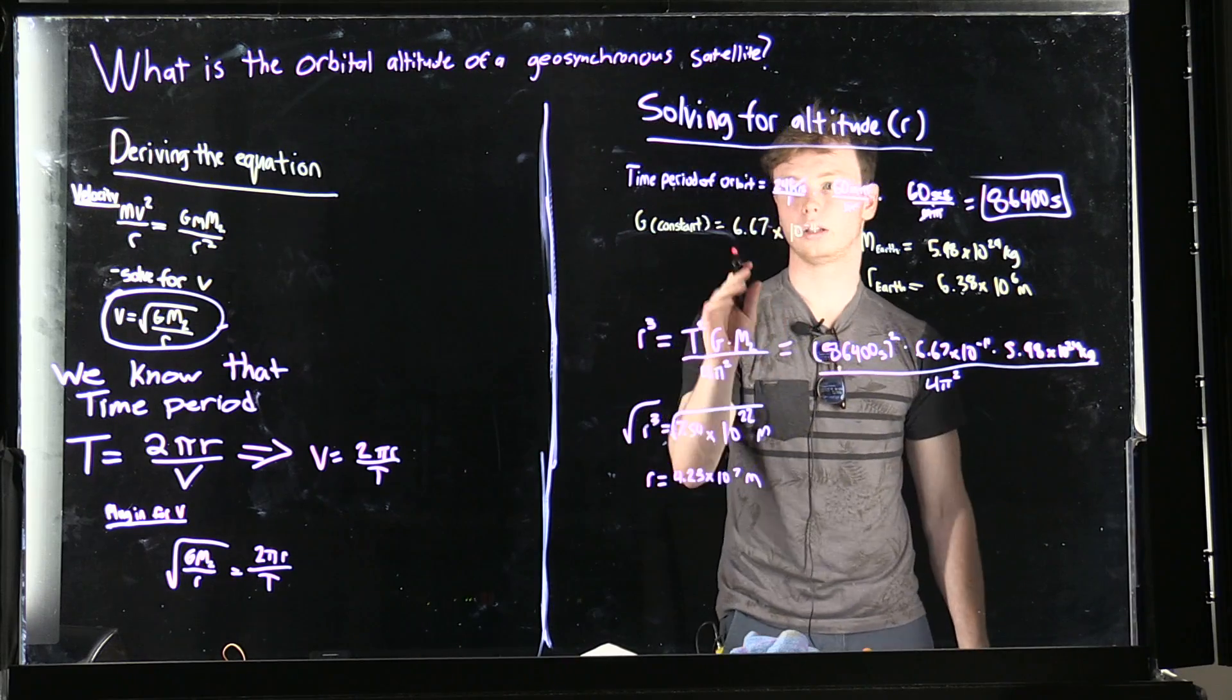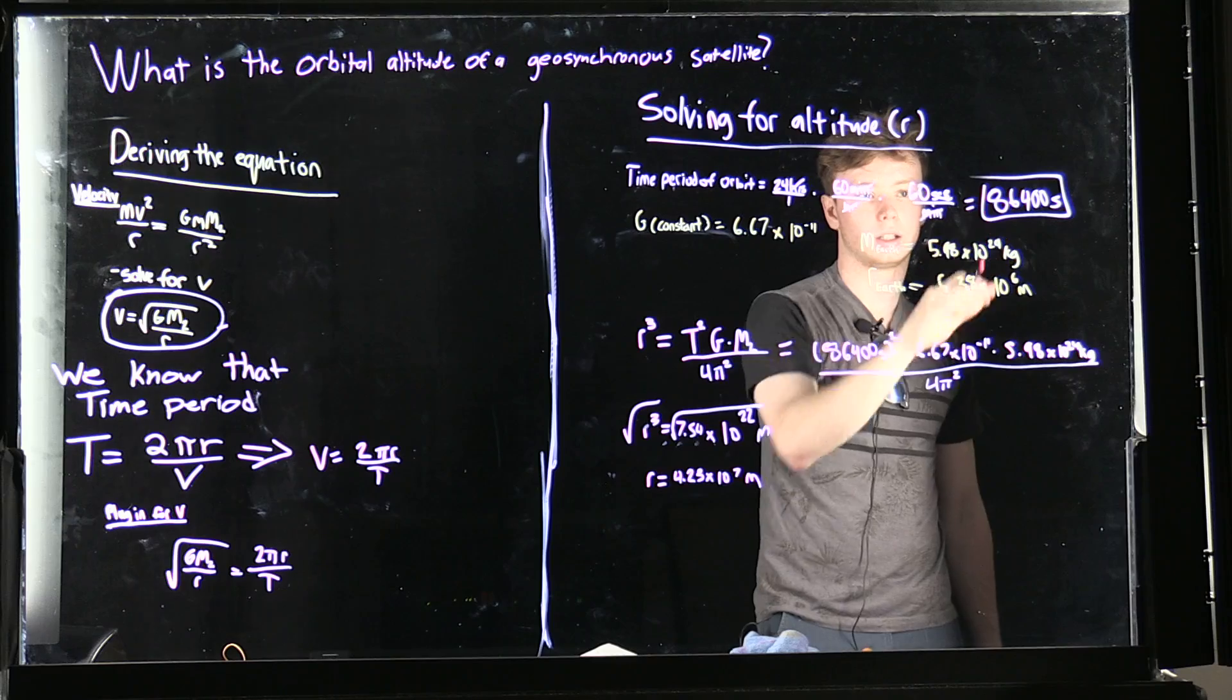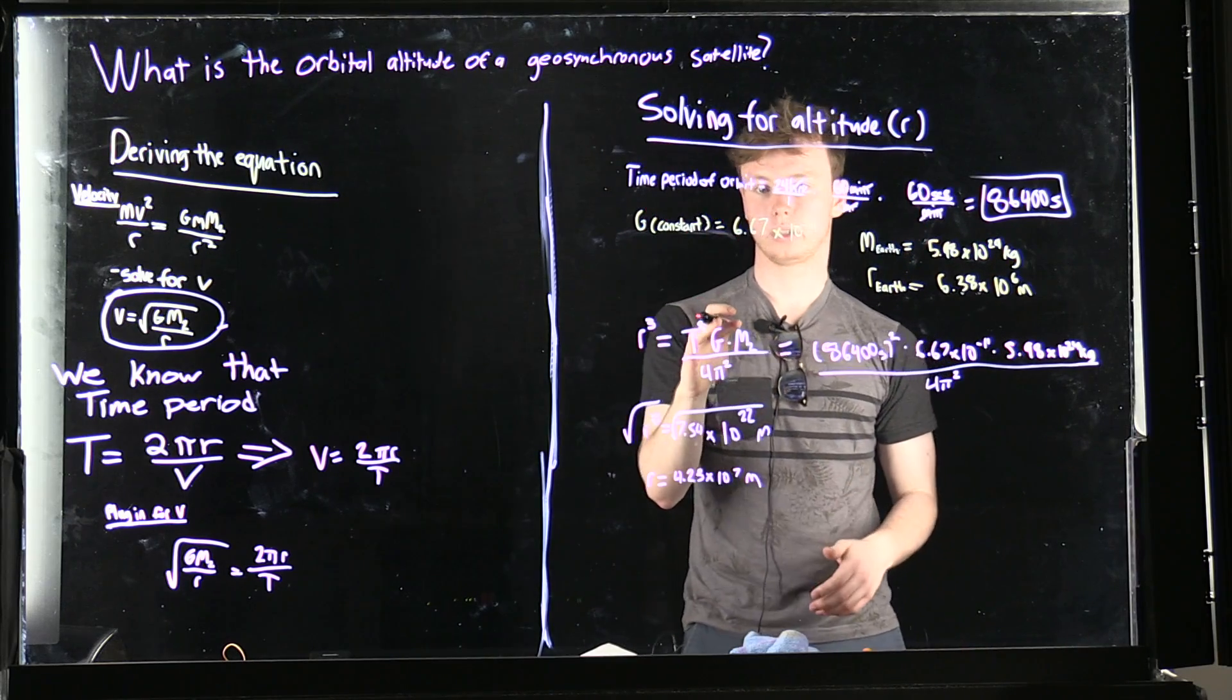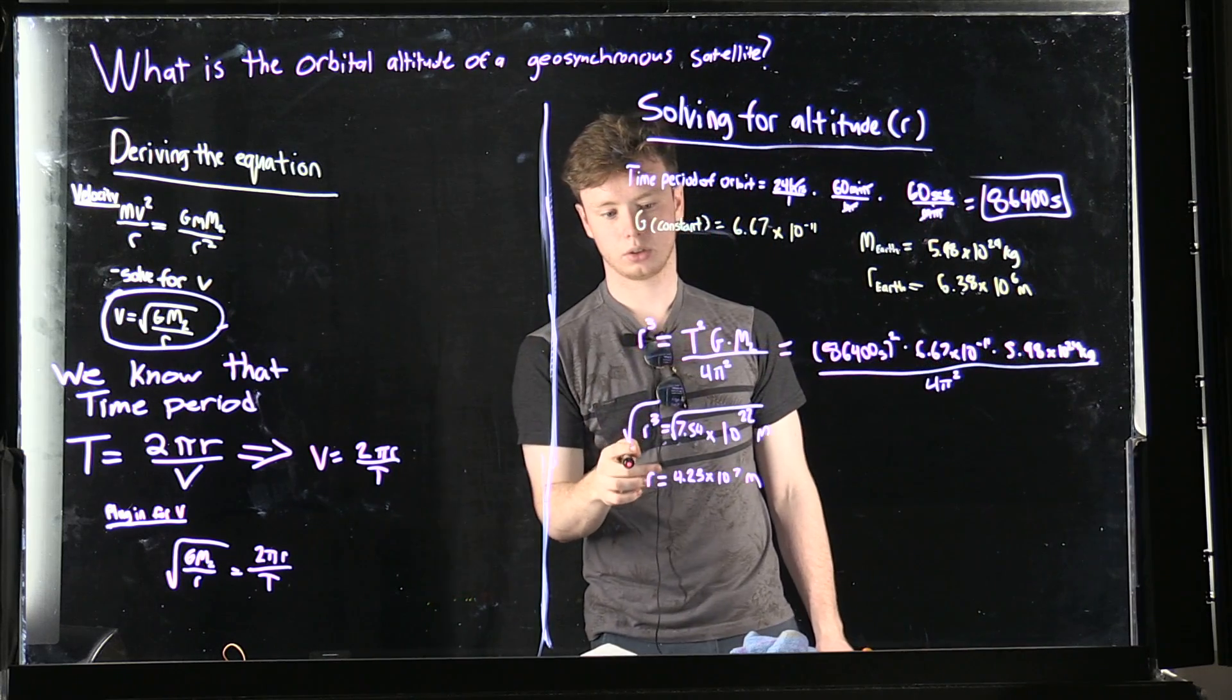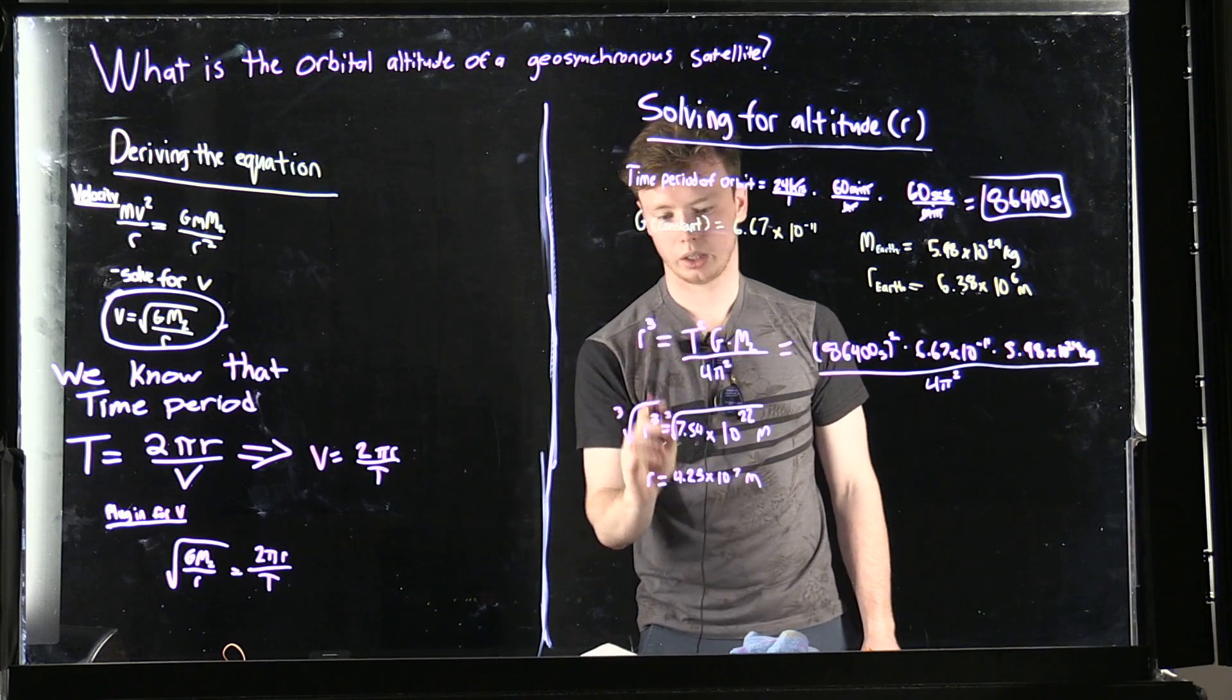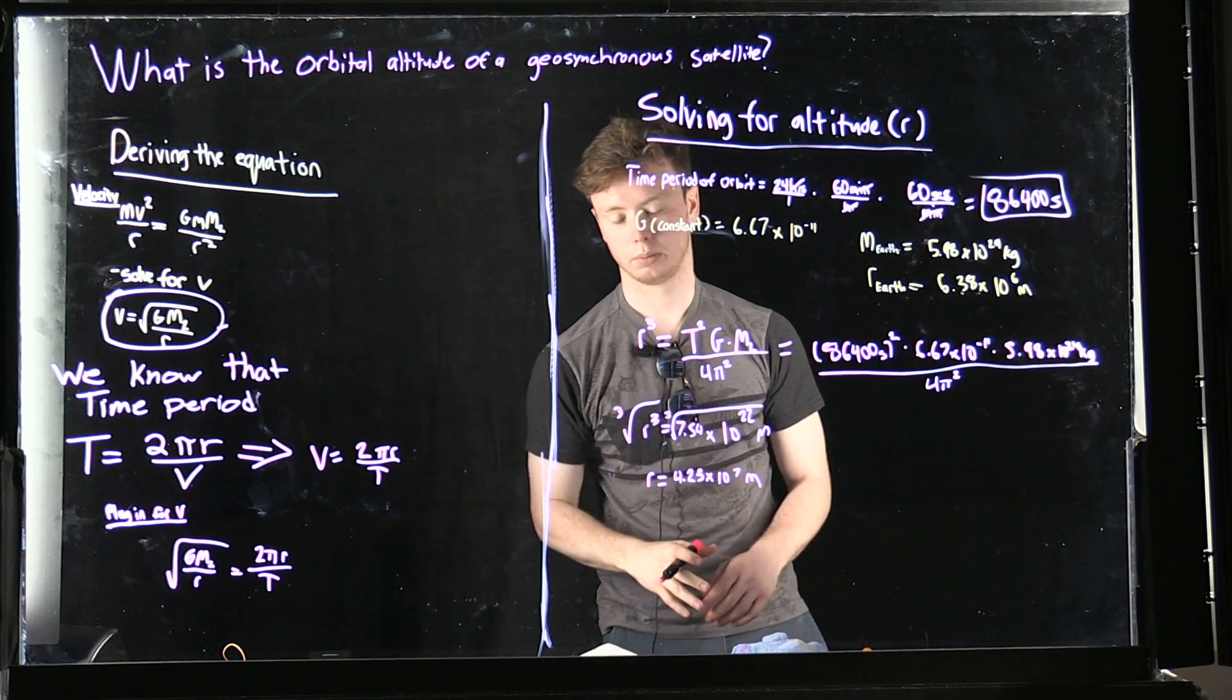Then we're going to plug in the time period of orbit, which is 24 hours converted to seconds, so we end up with 86,400 seconds. We're going to use the gravity constant and the mass of Earth, and we are going to multiply those all out. We end up with radius cubed, so we have to take the cubic root of each side, and the radius ends up being 4.23 times 10 to the 7th meters.